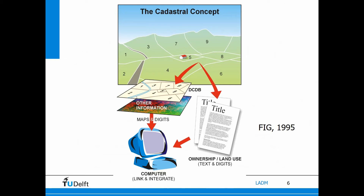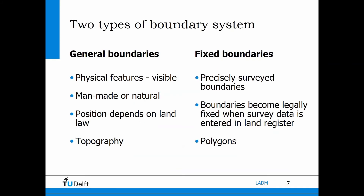Here we see in a nutshell the cadastre concepts. On one side the spatial information — parcels on a map — and on the other side ownership information, legal information linked to the parcels via the parcel identifier. The parcel boundaries are basically two types. There are countries that use general boundaries referring to physical features, real world objects such as rivers and roads.